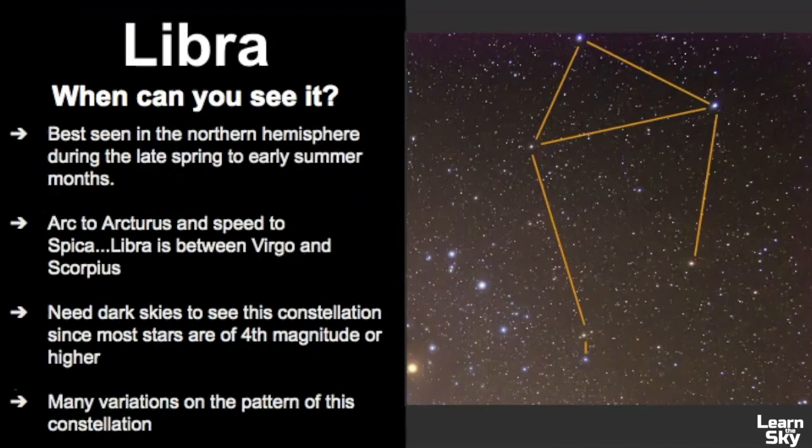So when can you see it? It's best seen in the northern hemisphere during the late spring to early summer months. The best way to find it is to use that strategy of arcing to Arcturus and speed down to Spica. Spica is in the constellation Virgo, and if you can identify Spica and Virgo, know that Libra is right next to it. And then you can also use the constellation Scorpius, which is partially pictured in this picture that you're looking at here. If you can find Scorpius and you know where Virgo is, Libra sits in between the two.